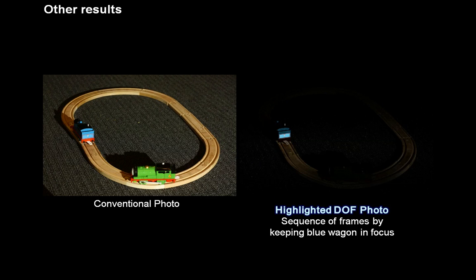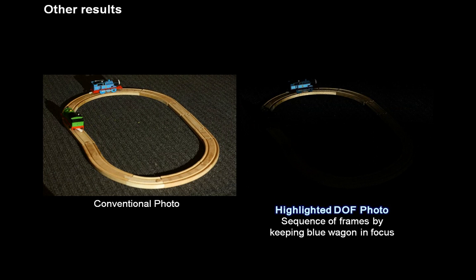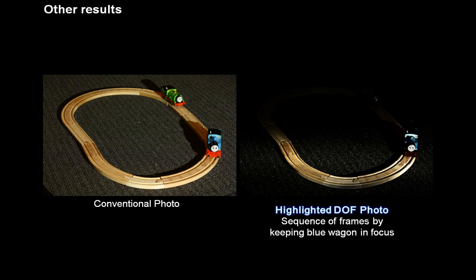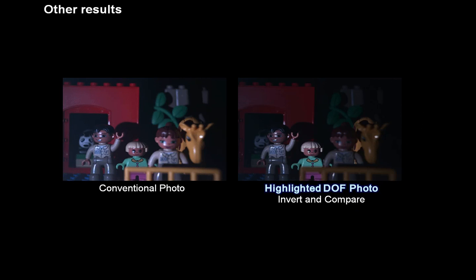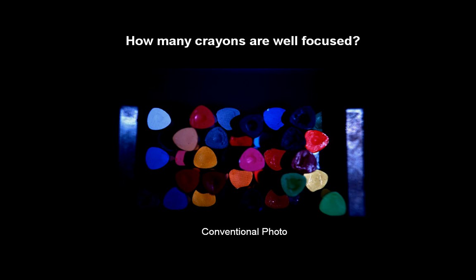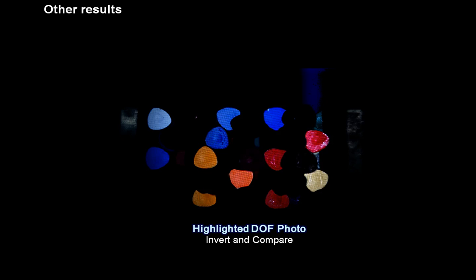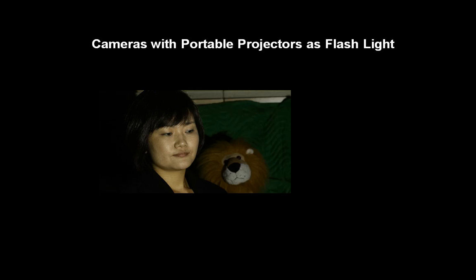These are highlighted depth of field photo results with toy trains — the blue toy train remains in focus and is always highlighted. This is another image of toys using the invert and compare method. Our highlighted depth of field photo is very useful for segmentation of multiple objects in the same depth of field. In a conventional photo, it is very difficult to determine how many crayons are well focused, but our highlighted depth of field photo answers this simply.